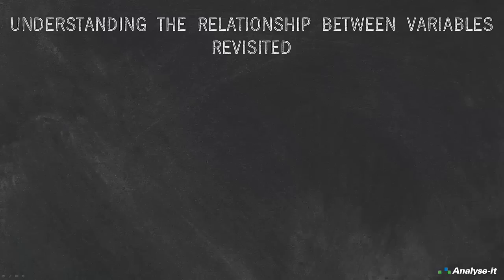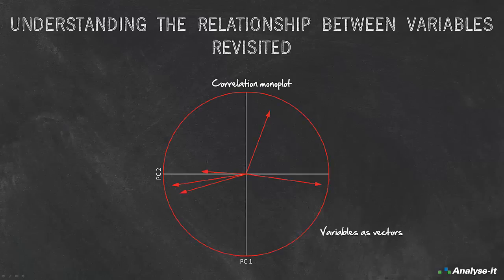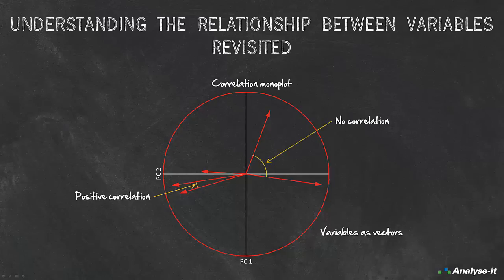Understanding the relationship between variables revisited: rather than using a scatter plot or correlation matrix, a two-dimensional correlation monoplot of the coefficients of the first two principal components can visualise the relationships between the variables. The correlation monoplot shows vectors pointing away from the origin to represent the original variables. The angle between the vectors is an approximation of the correlation between the variables: a small angle indicates the variables are positively correlated; an angle of 90 degrees indicates the variables are not correlated; and an angle close to 180 degrees indicates the variables are negatively correlated.